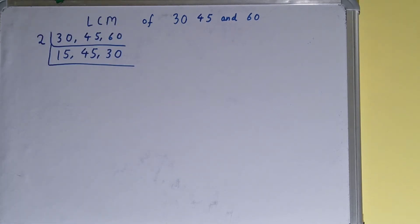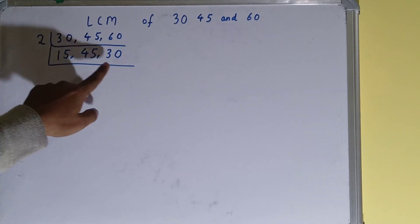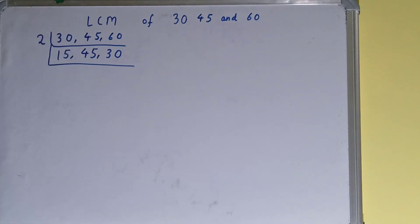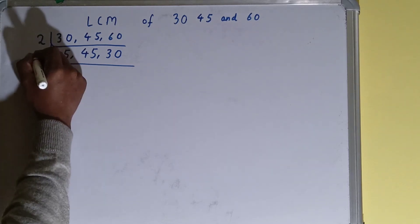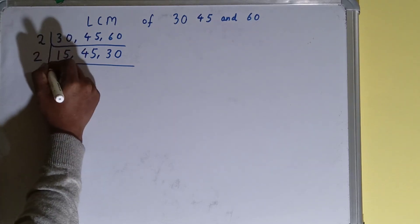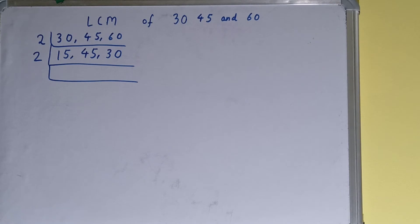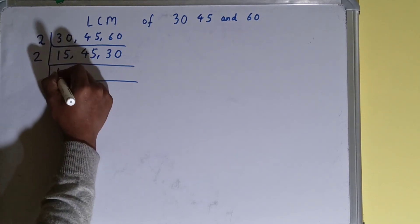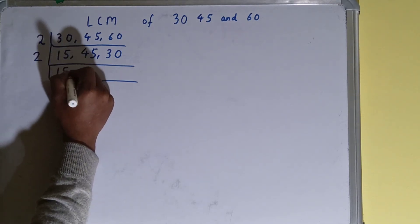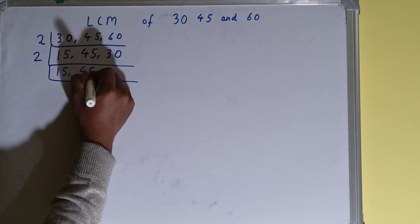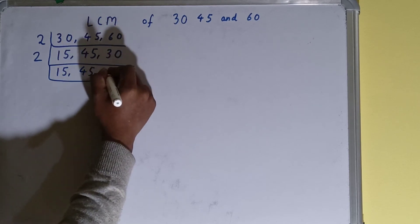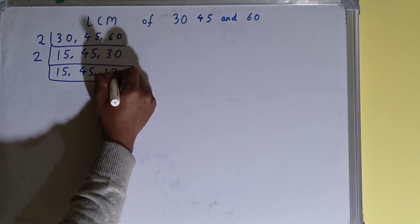Now again we check: is any number divisible by 2? Only the third number is, so we divide and write 2 on the left. The first and second numbers are not divisible, so we copy them down — 15 remains 15, 45 remains 45, and 30 becomes 15.